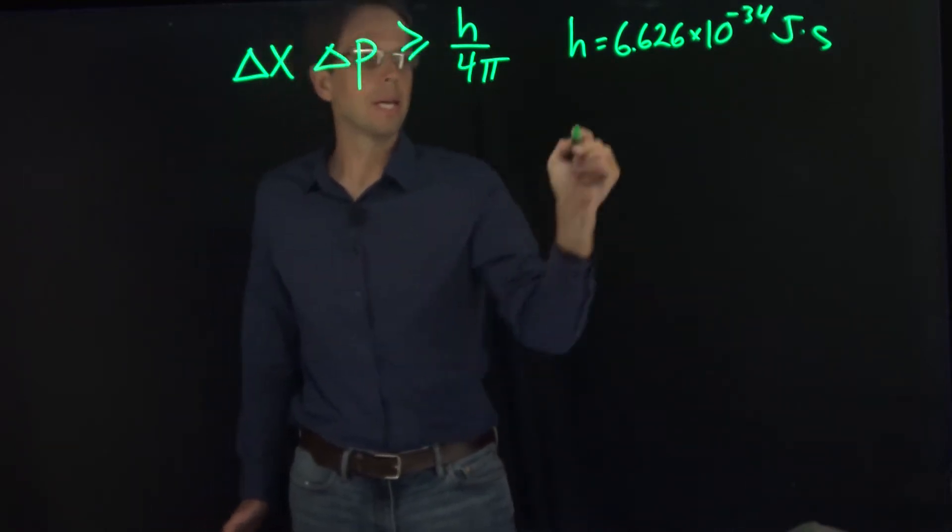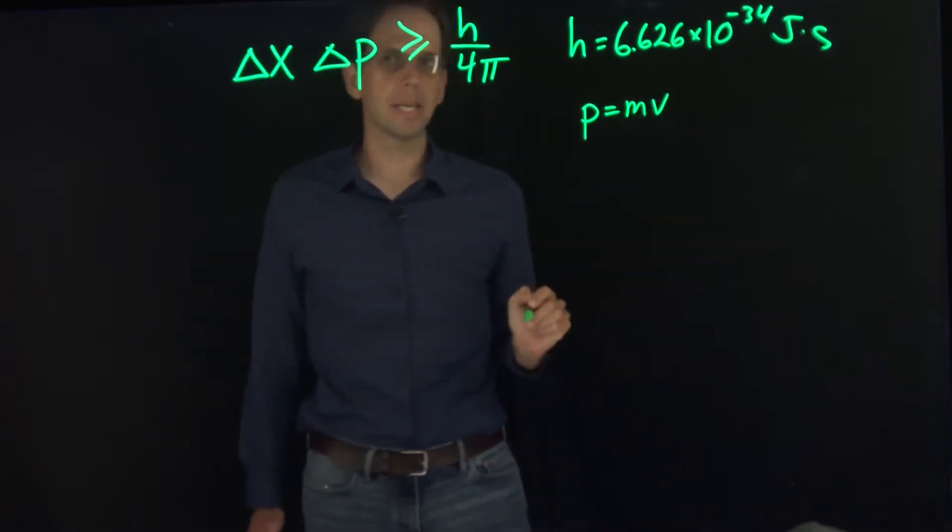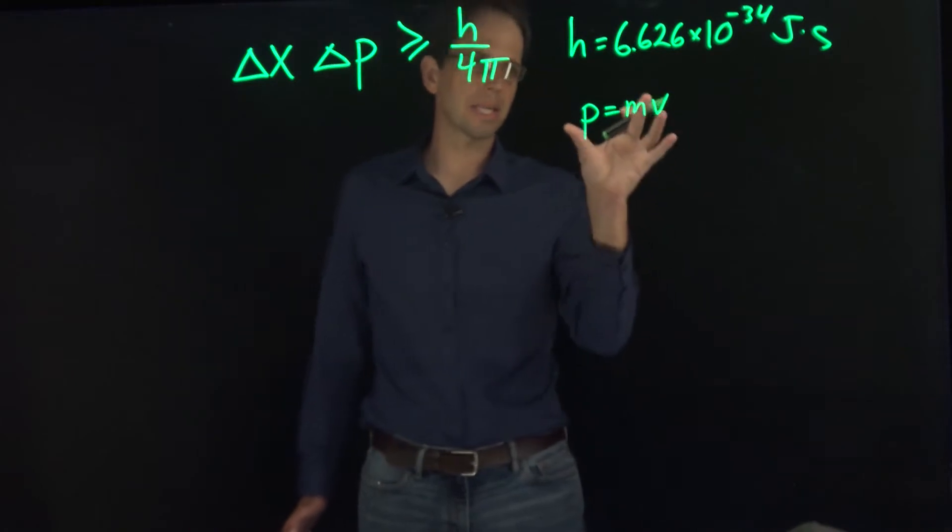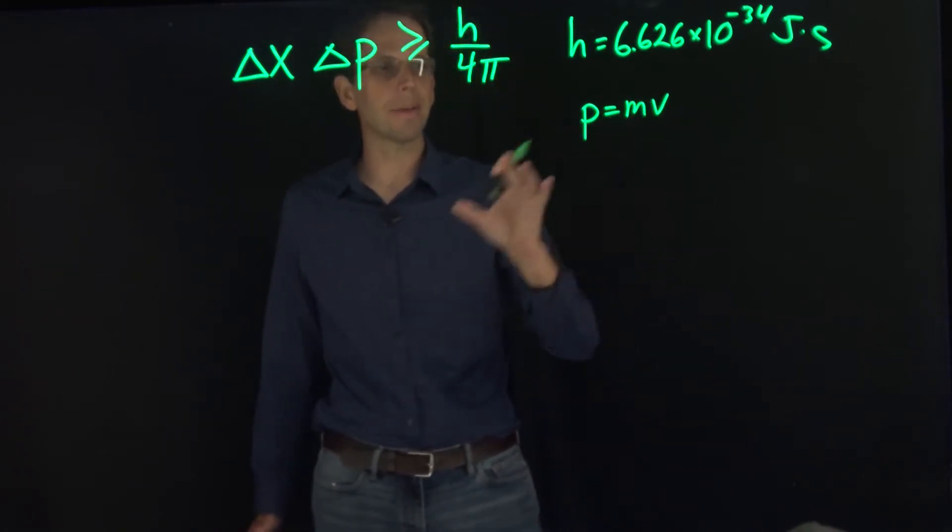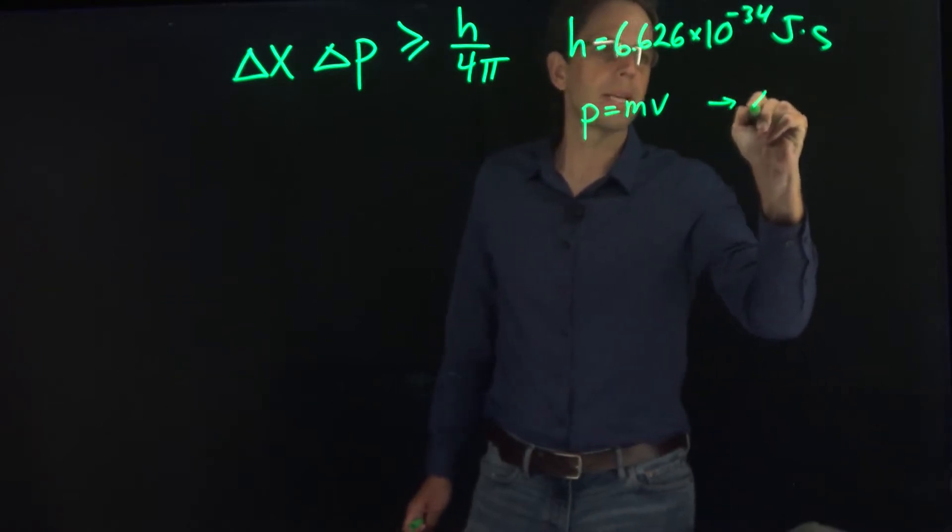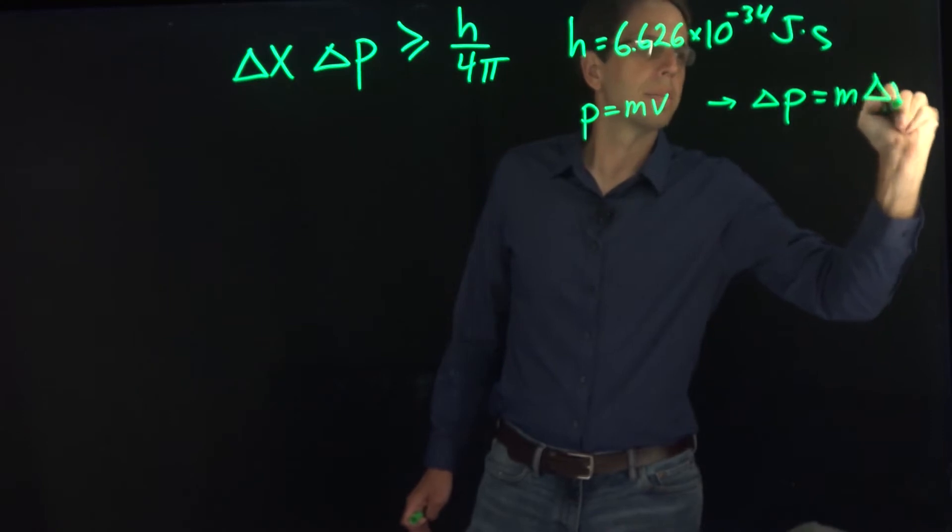And momentum P, you may recall, is given by mass times velocity. When we're talking about the uncertainty in momentum, we're typically talking about the uncertainty in the speed rather than the mass. So we're going to say that the uncertainty in momentum is equal to m times ΔV.